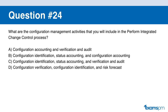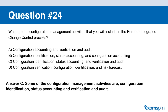Question number twenty-four. What are the configuration management activities included in the perform integrated change control process? A: configuration accounting and verification and audit. B: configuration identification, status accounting, and configuration accounting. C: configuration identification, status accounting, and verification and audit. D: configuration verification, configuration identification, and risk forecast. If you said C, you are correct. The configuration management activities include configuration identification, status accounting, and verification and audit.